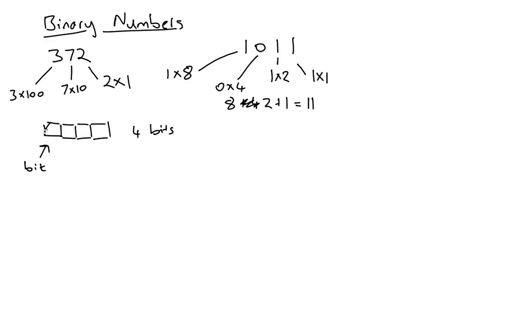We can make this on, this off, this on, this on, and then we've represented the number 1011 in binary, which is eleven.